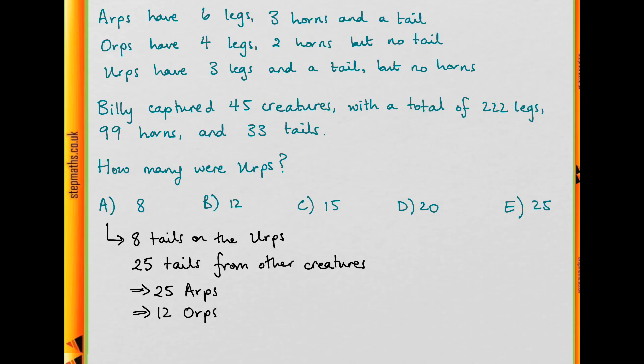Well now, Arps have 3 horns and Orps have 2 horns. So if we have 25 Arps, that's going to be 25 times 3 is 75. So we have 75 horns from Arps and 12 times 2 is 24. So we have 24 horns from the Orps. And if we add these two together, 75 plus 24, you could do 70 plus 20 and 5 plus 4 would give us 99 horns. Okay, we have the right number of horns, that's nice. Let's just double check on the legs.